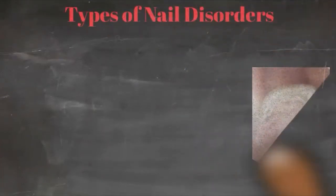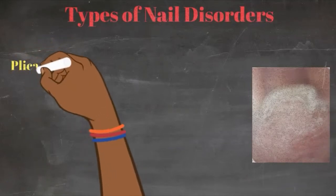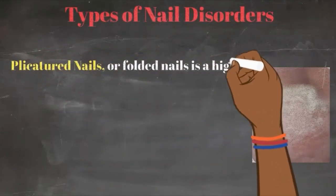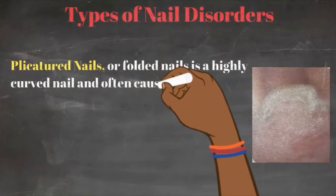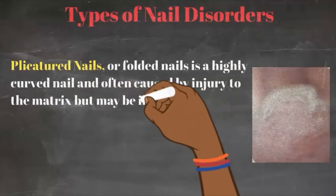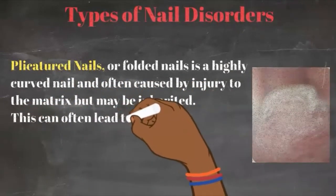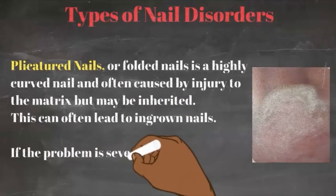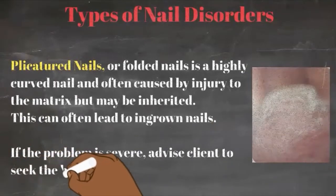Next, we have plicatured nails. This is when the nail is highly curved and is often caused by injury to the matrix, but it may be inherited. This can often lead to ingrown nails. You would probably notice this in older clients, especially on their toenails. If the problem is severe, advise the client to seek help from a medical professional like a podiatrist — we should not be digging too much into someone's nails as a nail technician.